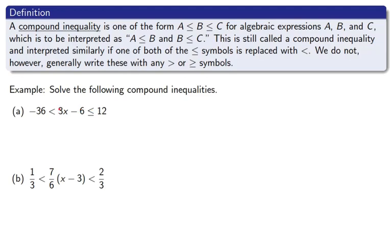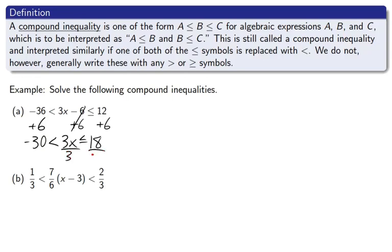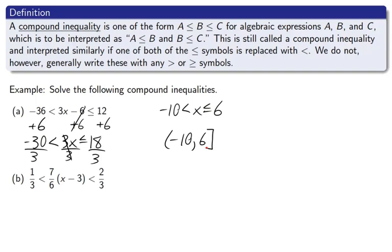First example: get x by itself, but to do that you have to do things to all three sides. So I add 6 to all three sides. I get negative 30 is less than 3x is less than or equal to 18. Now I'll divide all three sides by 3 and I get negative 10 less than x less than or equal to 6. In interval notation, that's negative 10 with parentheses — because it's strictly less than — to 6 with a bracket, because it's less than or equal to.